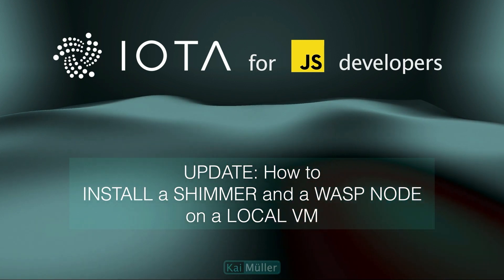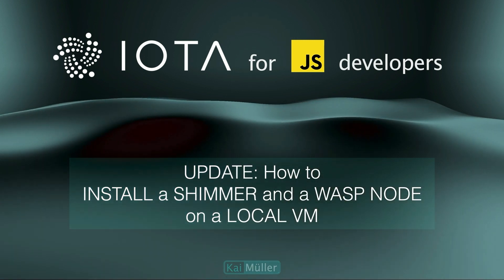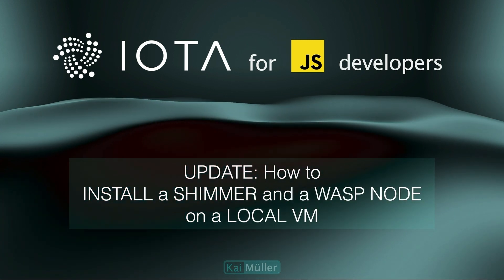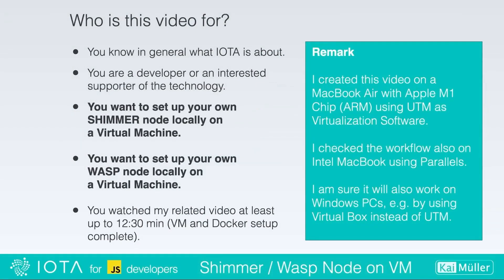End of September the Shimmer network was launched. I'll install a Shimmer node and a Wasp node on a local virtual machine. This is an update of my first video about installing a beta version of the Shimmer node. You should have seen the first 12 and a half minutes in which I installed the Docker daemon on a virtual machine running an Ubuntu operating system. I'm using a MacBook Air, but you can follow the instructions on a Windows PC. I checked it also on an Intel MacBook and on a virtual server at netcup.de.